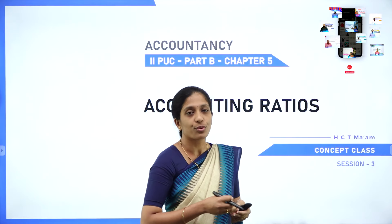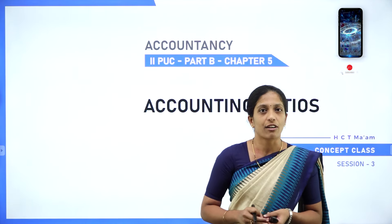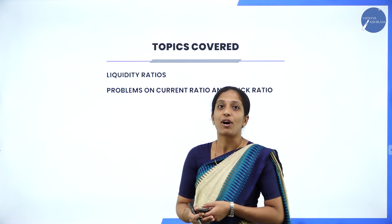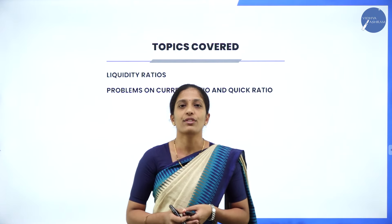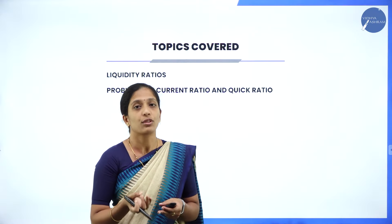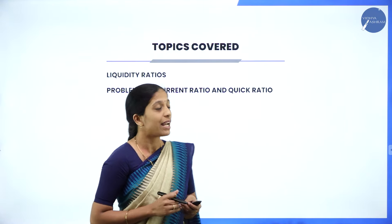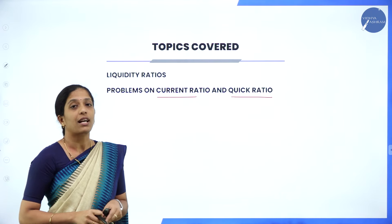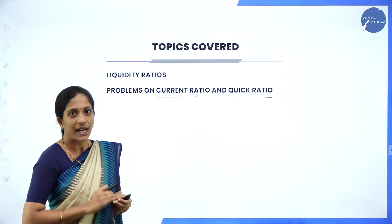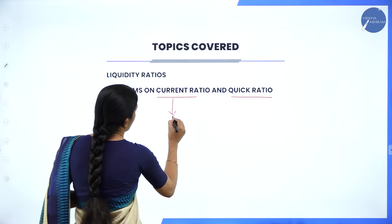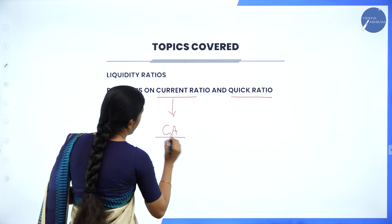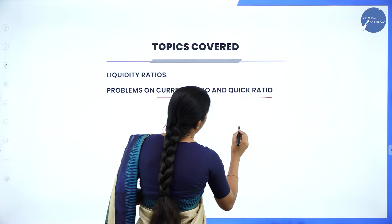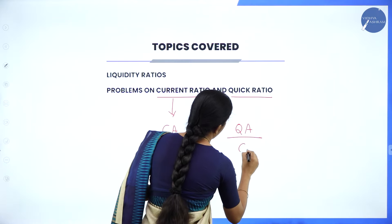We have already discussed two sessions from this chapter. So let us quickly recall what we have discussed in the previous session. In the previous session, we discussed about liquidity ratio — how to determine to what extent the firm is liquid. There we learned about current ratio as well as quick ratio. Current ratio is current assets divided by current liabilities, whereas quick ratio is liquid assets or quick assets divided by current liabilities.